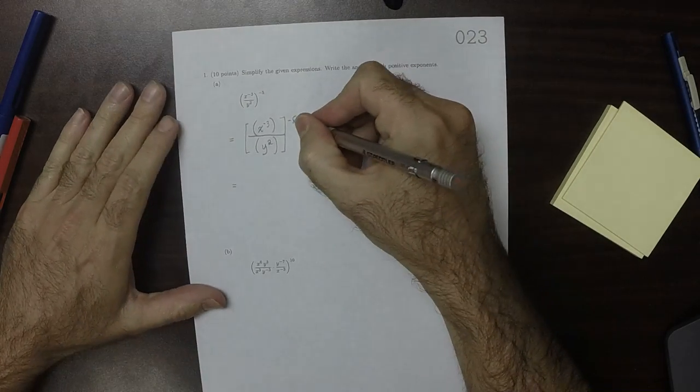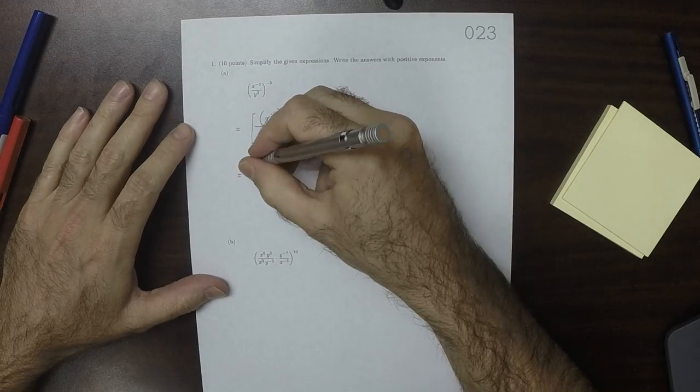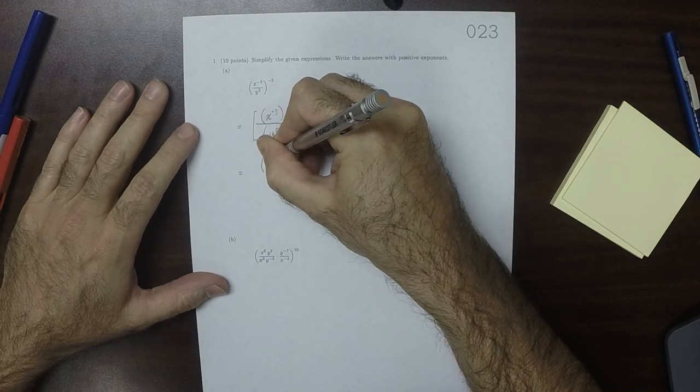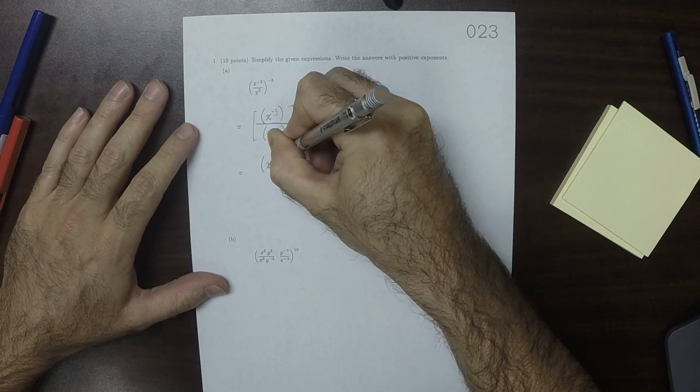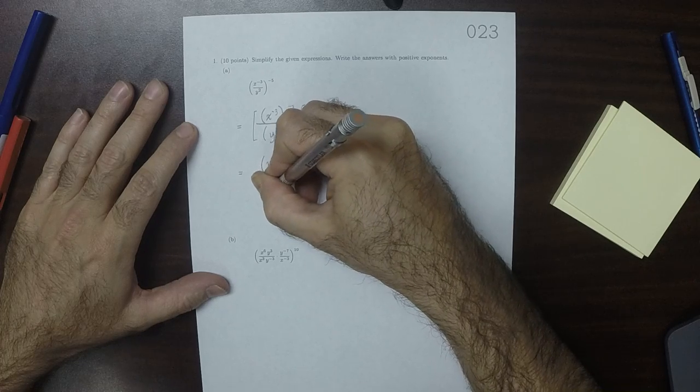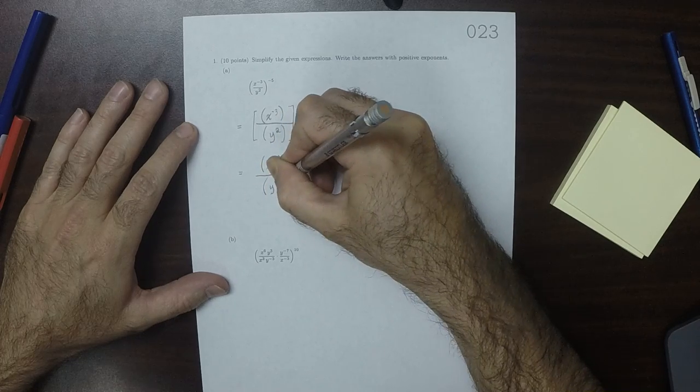And so now we can distribute this exponent to the numerator and denominator. x to negative 3, to negative 5, divided by y to 2, to negative 5.